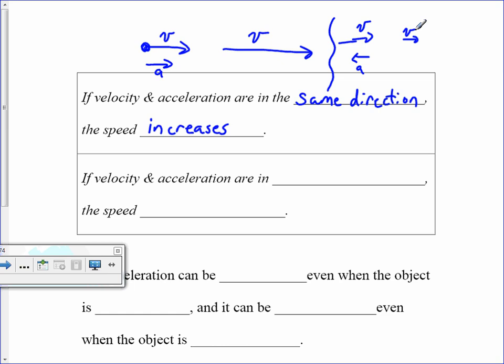If velocity and acceleration are in opposite directions, the speed will decrease. Notice that I haven't said anything about signs here, because a negative acceleration doesn't necessarily mean that my object is slowing down. A great example: if I drop something, it's accelerating downward but it's speeding up, because the acceleration is in the negative direction and the velocity is also in the negative direction.